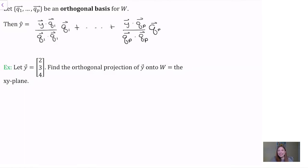plus y dot q2 over q2 dot q2 times q2, and so on up to y dot qp over qp dot qp times qp. That is, we find the projection of our vector y onto each of the basis vectors from our orthogonal basis, and then we add the results.